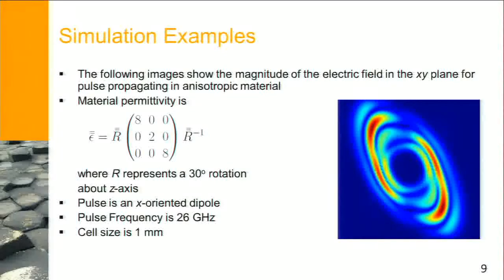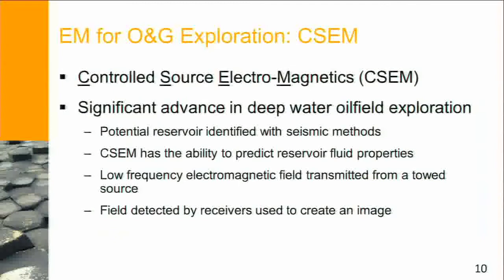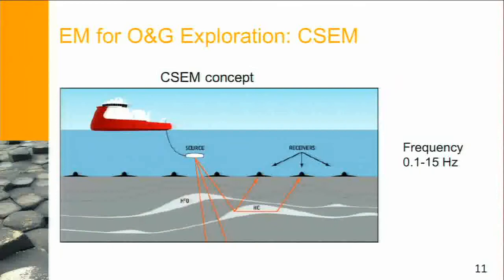CSEM stands for controlled source electromagnetic. It is a potentially very interesting technique that has been around for the last few years with the intriguing feature of increasing the probability of finding oil once seismic exploration is done. Typically, classical seismic deep-water imaging gives you lithology and potential oil locations at maybe 30–40% probability. Following this with an electromagnetic survey can increase your chances of hitting oil to 60–70%.